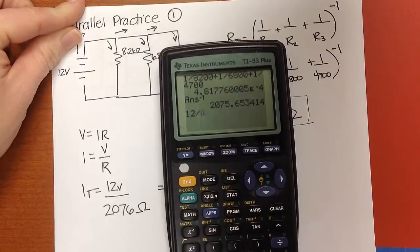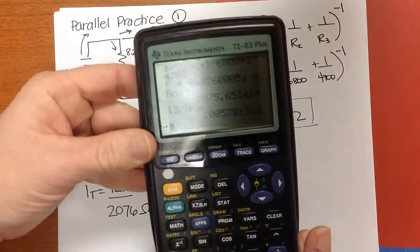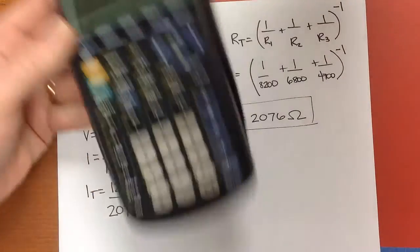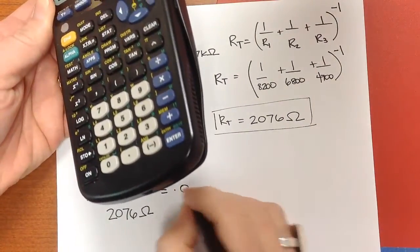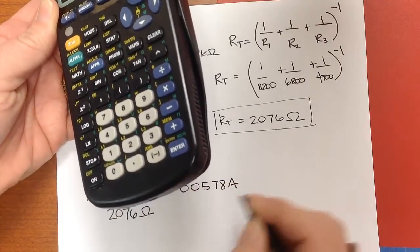12 divided by, that's the answer from before, and I get, it looks like about 5.78 milliamps or 0.00578 amps.